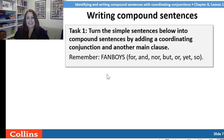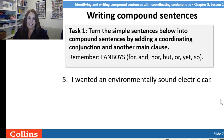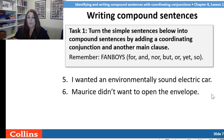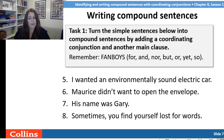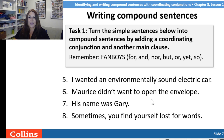The next one — you're going to do exactly the same thing. Choose a coordinating conjunction and choose another main clause. We've got some different ones here — they're slightly harder. 'I wanted an environmentally sound electric car.' 'Maurice didn't want to open the envelope.' 'His name was Gary.' 'Sometimes you find yourself lost for words.' You're changing the full stop for a comma, you're choosing a coordinating conjunction, and then you are writing the second clause in that sentence. Stop and pause the video now.